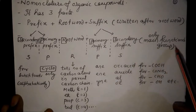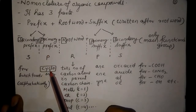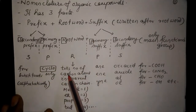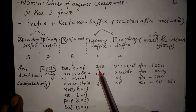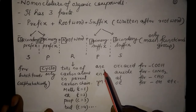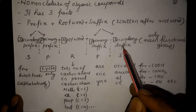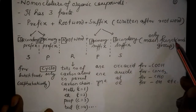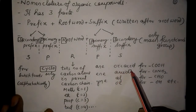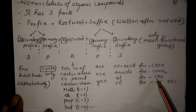The secondary suffix represents the only main functional group. The primary prefix is cyclo. The root word tells the number of carbon atoms in the parent carbon chain. The primary suffix is 'ane' for carbon-carbon single bonds, 'ene' for carbon-carbon double bonds, and 'yne' for carbon-carbon triple bonds. The secondary suffix examples include: oic acid for -COOH, amide for -CONH2, al for -CHO, ol for -OH, etc.